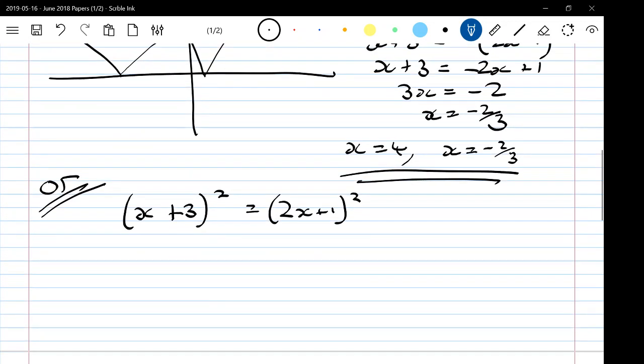If you square both sides, you get x squared plus 6x plus 9 equals 4x squared plus 4x plus 1. So, 0 is 3x squared minus 2x minus 8. Is that... have I done that right?